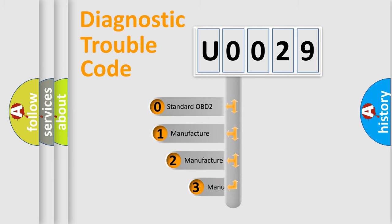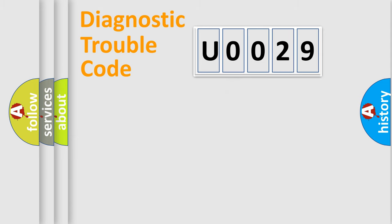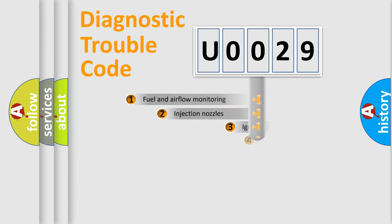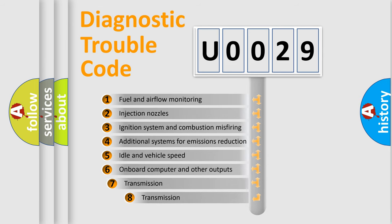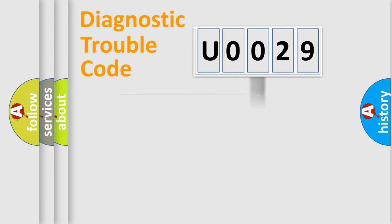If the second character is expressed as zero, it is a standardized error. In the case of numbers 1, 2, or 3, it is a more prestigious expression of the car-specific error. The third character specifies a subset of errors. The distribution shown is valid only for the standardized DTC code.